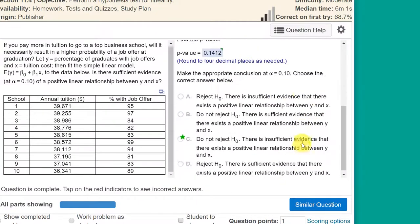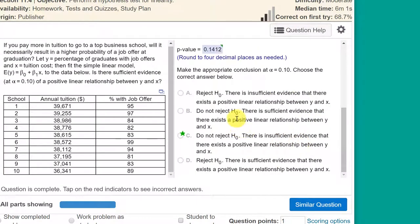Let's look at the last part there. It says, what is the conclusion? Well, because our p-value is above our alpha of 0.1. We've got a p-value of 0.14. That's greater than 0.1. Therefore, we fail to reject or do not reject the null. And that means there's insufficient evidence that there exists a positive linear relationship that beta 1 is greater than zero.